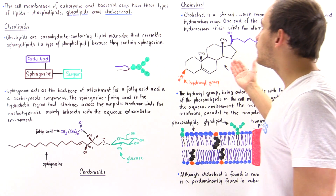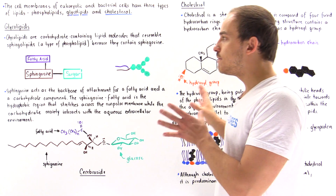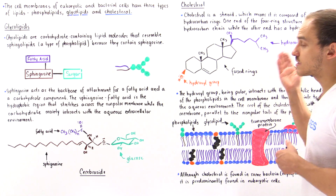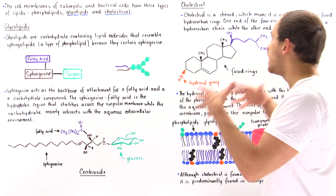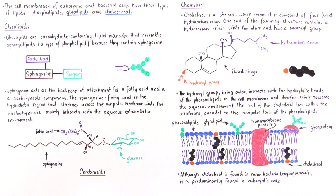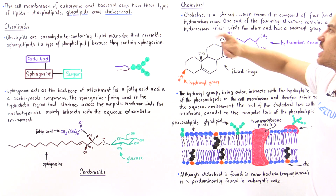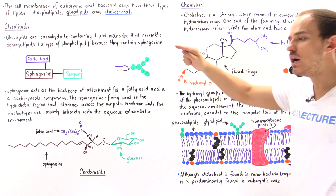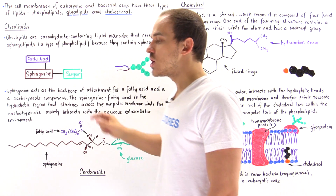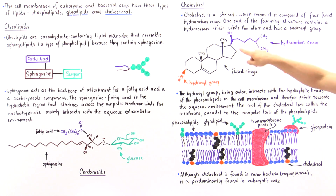Now let's move on to cholesterol molecules. Cholesterol molecules have a very special shape because they are actually steroid molecules, which means they contain a four-ring structure. Cholesterol is a steroid composed of four fused hydrocarbon rings. On one side of those four rings, we have a tail that is hydrophobic — a hydrocarbon chain.